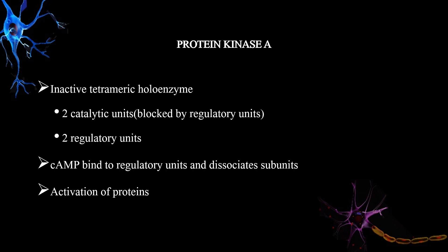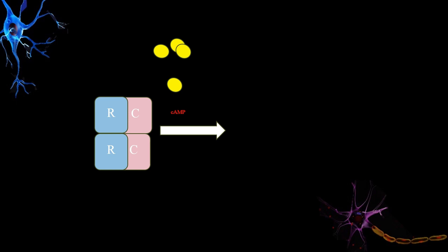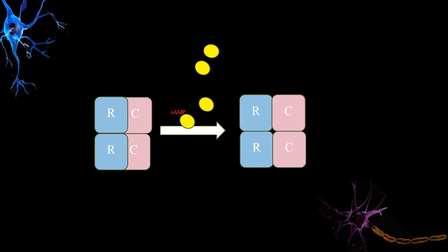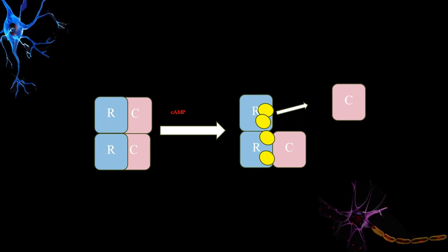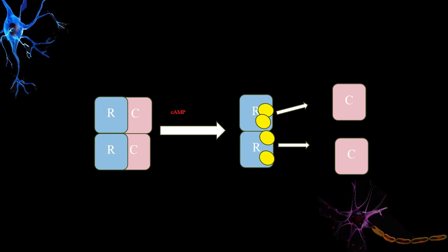Protein kinase A is an inactive tetrameric holoenzyme which is essential in the activation of several proteins. Most protein kinases are cAMP-dependent, though there are exceptions — for example, protein kinase C is not cAMP-dependent. Protein kinase A has two catalytic units and two regulatory units, where the catalytic units are blocked by the regulatory units. Whenever cAMP is present, it binds to the regulatory units, causing dissociation of the two catalytic units, making protein kinase A catalytically active.